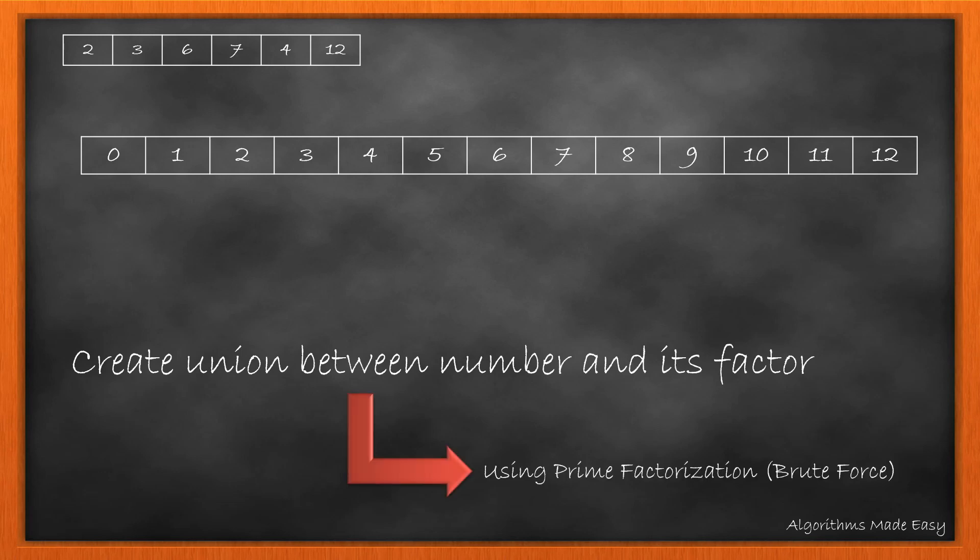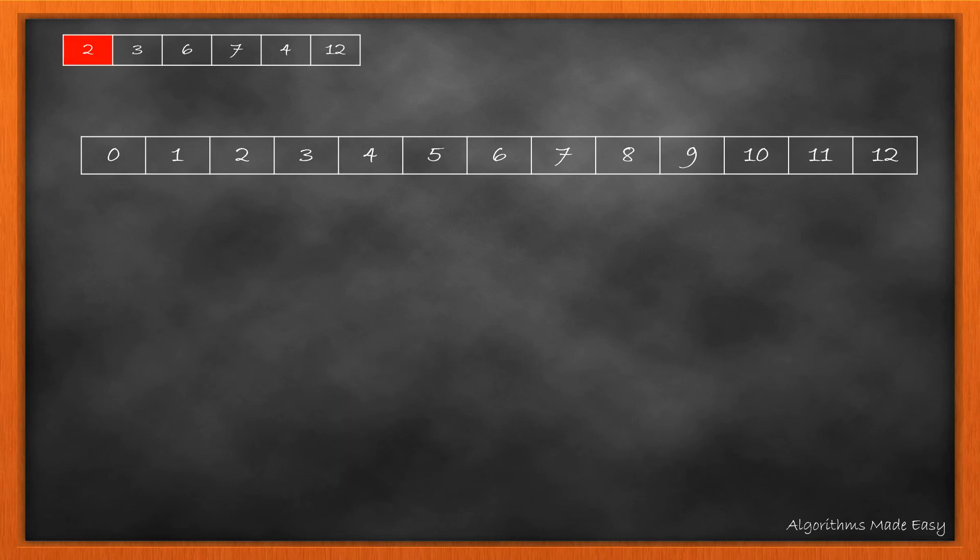We will achieve this by prime factorization. Using the brute force approach, we'll find the prime factor of the number and then call the union method to create the relationship between the two. We'll start looping on the input array and pick our first value. As 2 is a prime number and a factor of itself, there won't be any update in the array. Same will happen with 3. Now we come across 6.